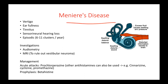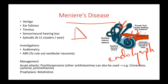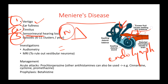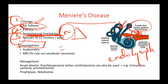The next condition is Meniere's disease. Meniere's disease involves a lot of accumulation of endolymph, which puts pressure on the inner ear, the semicircular canals, and the vestibulocochlear nerve. Therefore the patient will have a triad: vertigo, tinnitus, and sensorineural hearing loss. It is sensorineural because the nerve is being compressed and damaged by the excessive fluid. The patient might also have a feeling of ear fullness. For investigations, you perform pure tone audiometry, which will confirm sensorineural hearing loss.